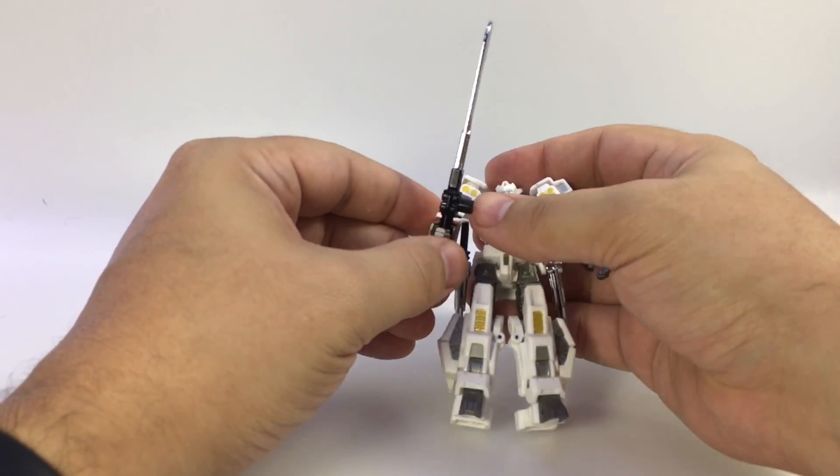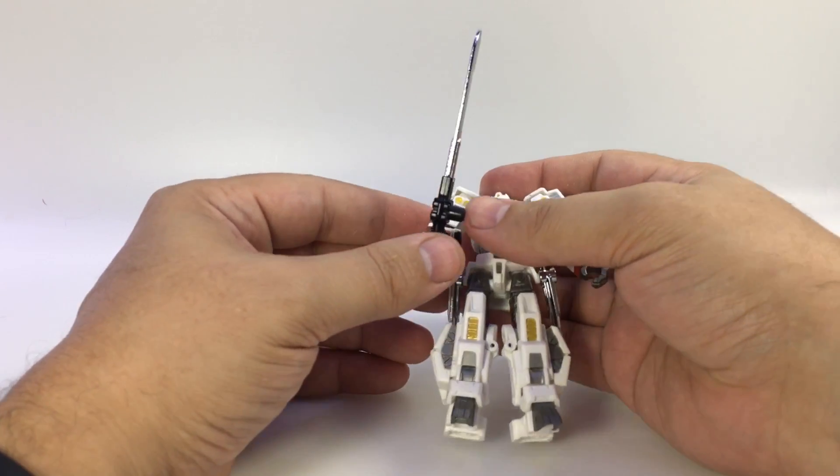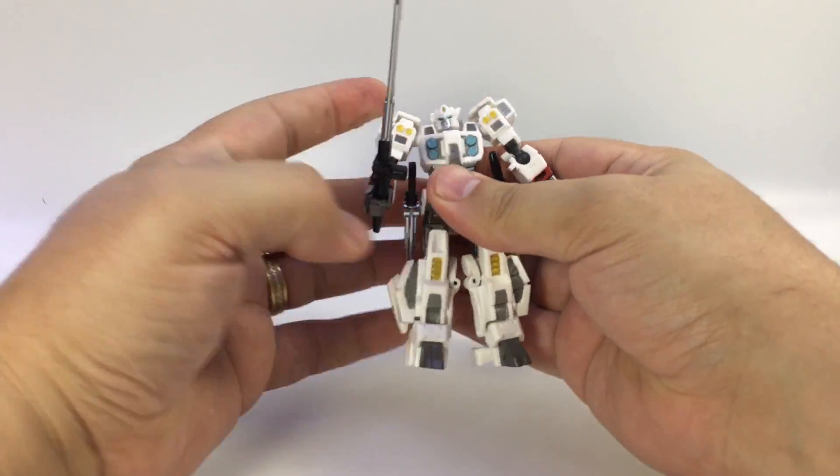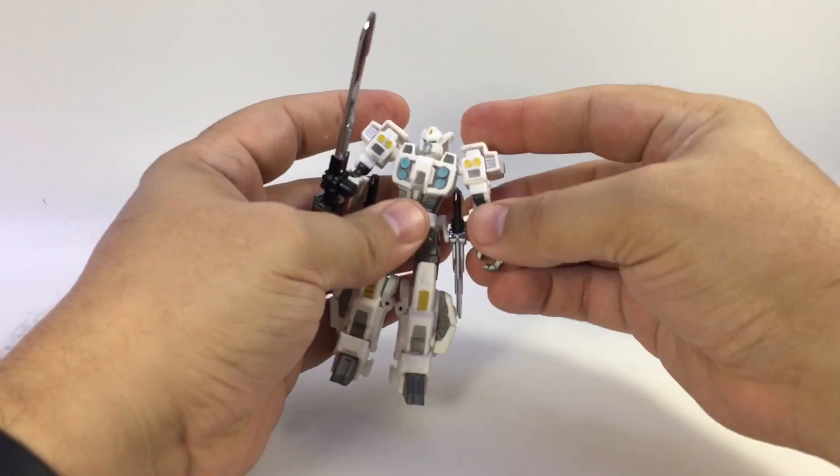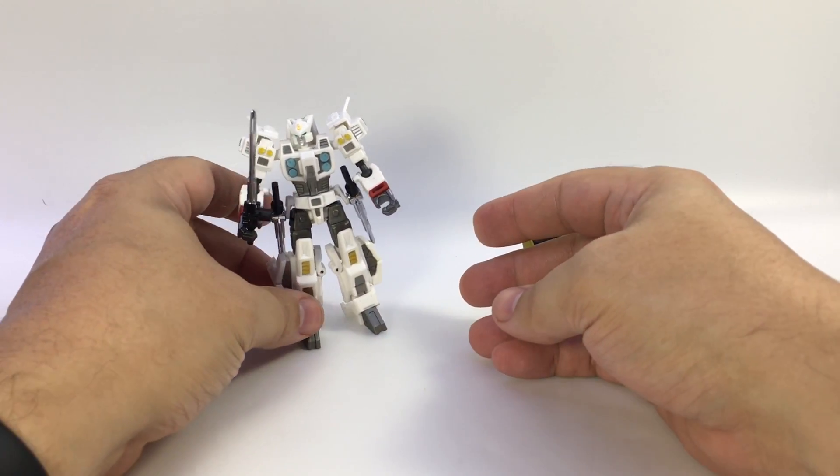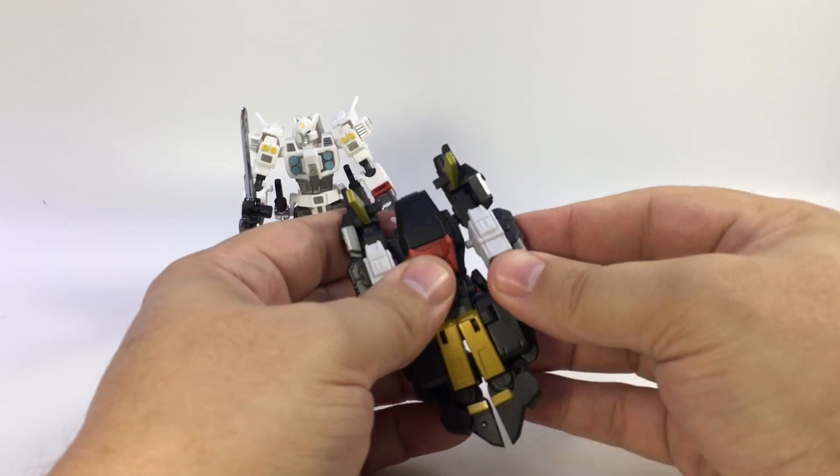Now when he's holding the sword, that big peg is a little bit of an eyesore, especially on a figure this size since it's a standard five millimeter peg, but not too bad. Bring the shoulders down. If we give him a little bit more clearance here. So there's the drift version in robot mode. And like I said, it's exactly the same thing here for deadlock.